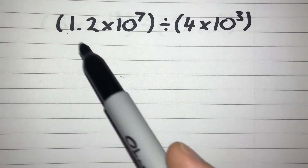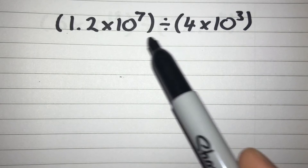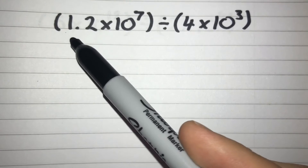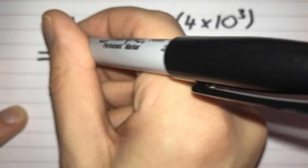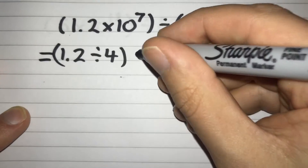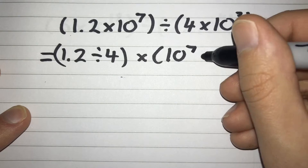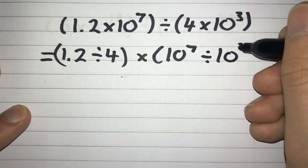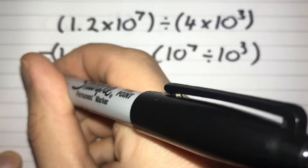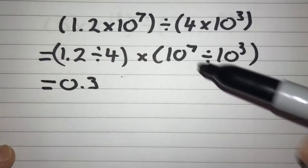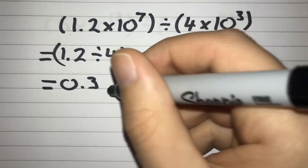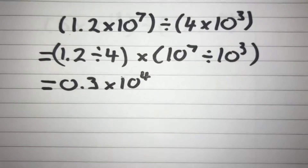In this next example we've got 1.2 times 10 to the power of 7 divided by 4 times 10 to the power of 3. So again let's rearrange this calculation — let's put 1.2 divided by 4 out the front, multiplied by 10 to the power of 7 divided by 10 to the power of 3. Well, 1.2 divided by 4 gives us 0.3, and 7 take away 3 gives us 4, so that's multiplied by 10 to the power of 4.